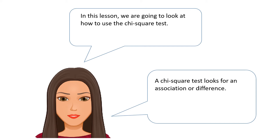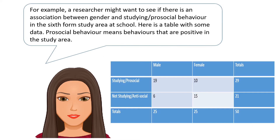In this lesson we're going to look at how to use the chi-squared test, a statistical test. A chi-squared test looks for an association or difference. For example, a researcher might want to see if there's an association between gender and studying or pro-social behaviour in the sixth form study area at school.